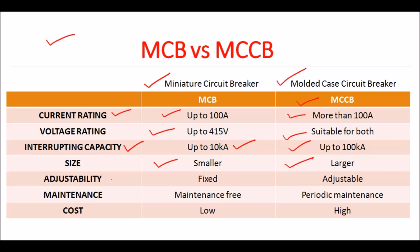Regarding adjustability, MCB has a fixed trip setting — the trip current and characteristics cannot be adjusted. Whereas in MCCB, settings can be adjusted to match specific application requirements. So MCCB is adjustable.